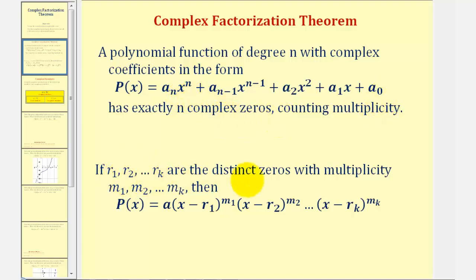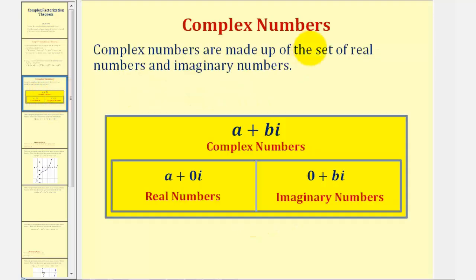If these r's are the complex zeros with multiplicity given by these m's, we can write a polynomial function as a product of linear factors, where the r's are the zeros and the m's are the multiplicities. It's important to keep in mind that complex numbers are made up of the set of real numbers and the imaginary numbers in the form a plus or minus bi.